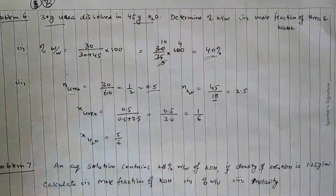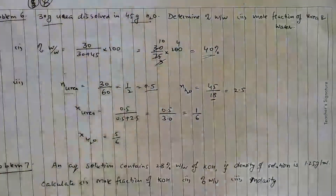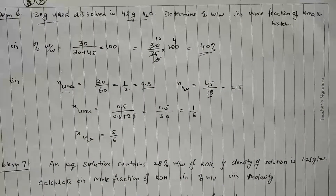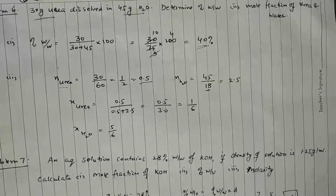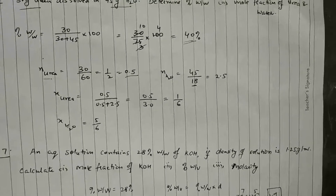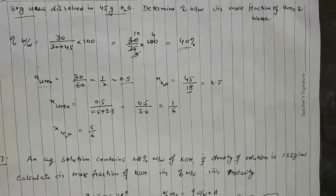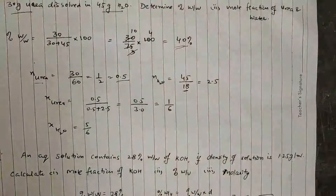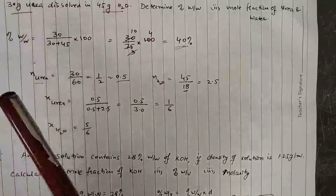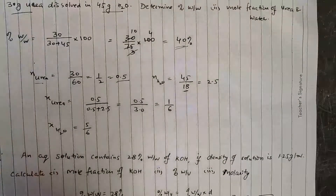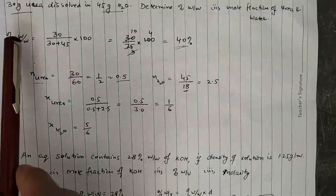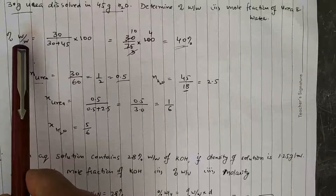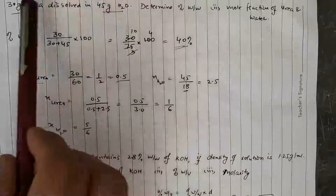Next is Problem 6: 30 grams of urea dissolved in 45 grams of water. Determine percent weight by weight and mole fraction of urea and water. According to the definition of percent weight by weight, we need the weight of solute and weight of solution. This is the weight of solvent, and we must add the two to get the weight of solution.